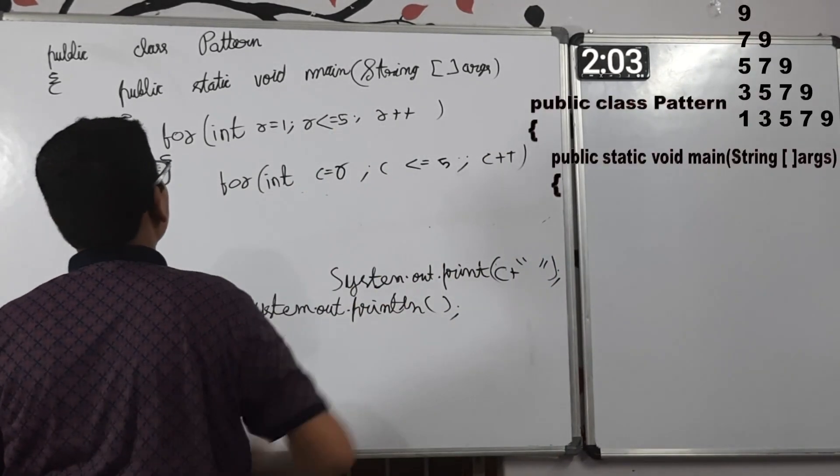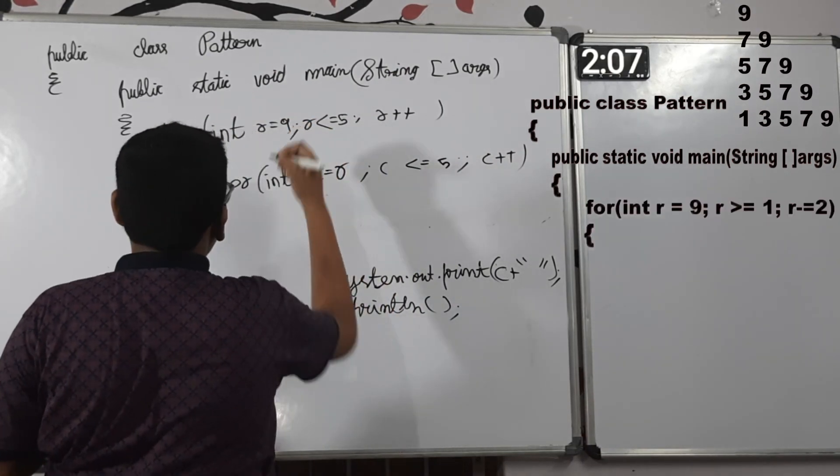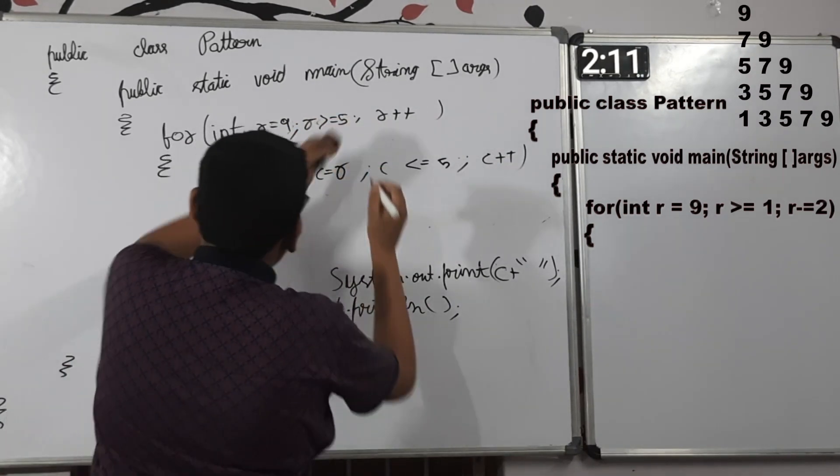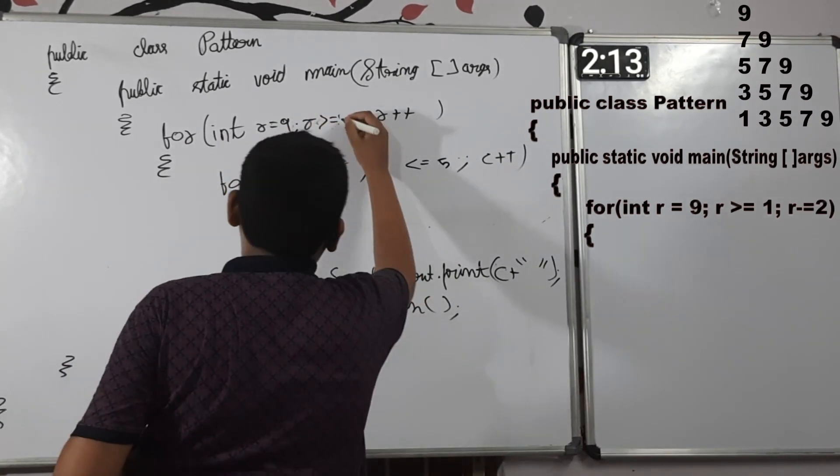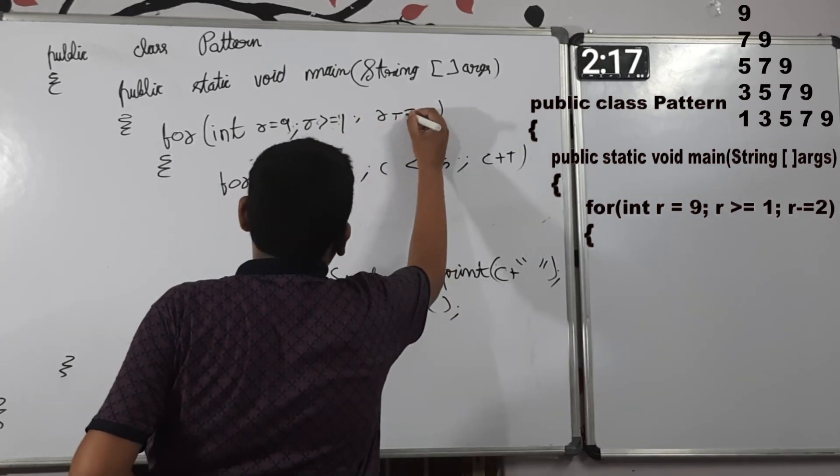Now we will write the third one. r is equal to 9, r greater than is equal to 1, r minus is equal to 2.